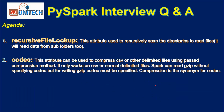What is recursive file lookup? This attribute is used to recursively scan directories to read files — it will read data from subfolders too. We have a parent folder along with child folders, and we will be reading data from all of those. Next is codec: this attribute can be used to compress CSV or other delimited files using a passed compression method. It only works on CSV or normal delimited files. Spark can read gzip without specifying codec, but for writing gzip, codec must be specified. Compression is the synonym for codec.